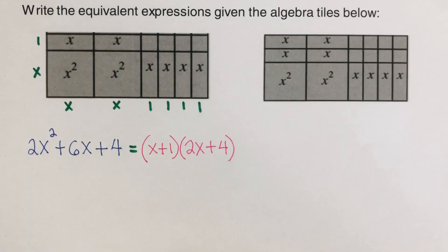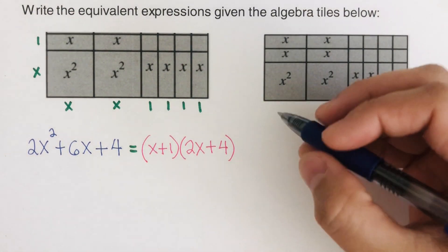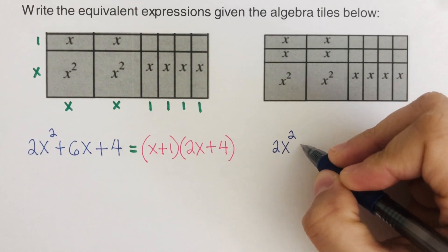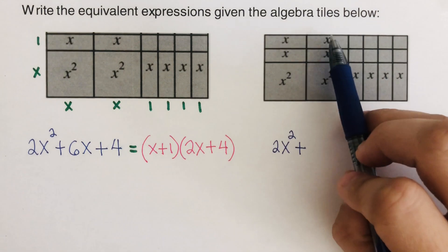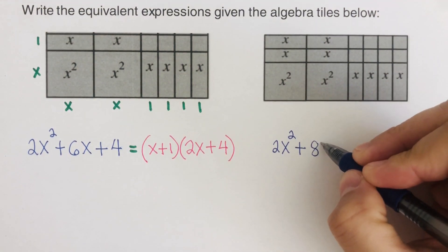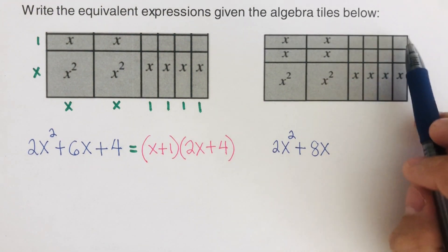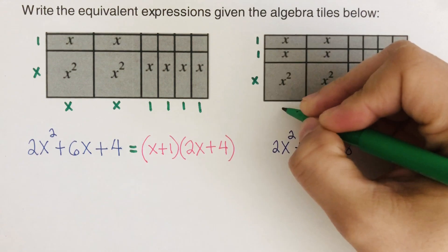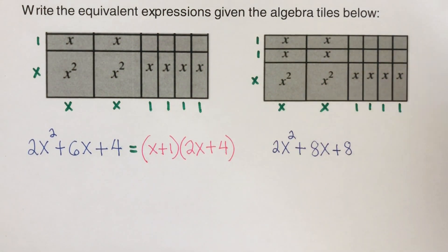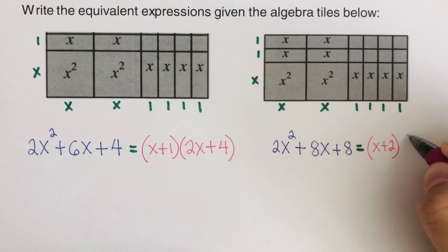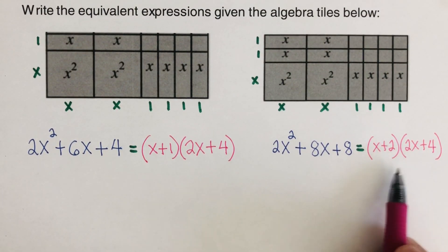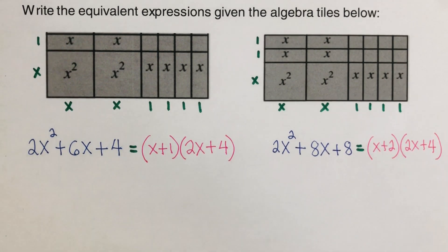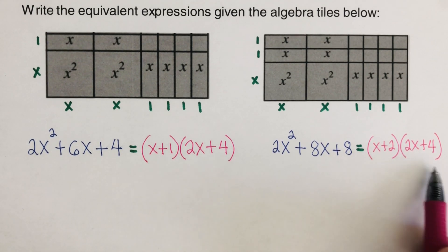Okay, let's go over this. We have two x squared, then I count the x's — one, two, three, four, five, six, seven, eight — so plus eight x, and then the ones — one, two, three, four, five, six, seven, eight — so plus eight. I label the parts: one, one, x, x, and x; one, one, one, one. The equivalent factored form is x plus two times two x plus four. If you multiply using the FOIL method it comes out to the area as a sum: two x squared plus eight x plus eight.